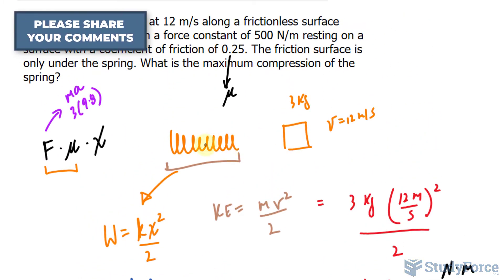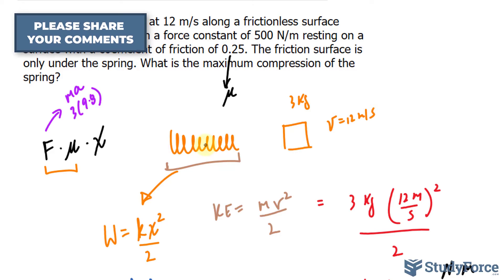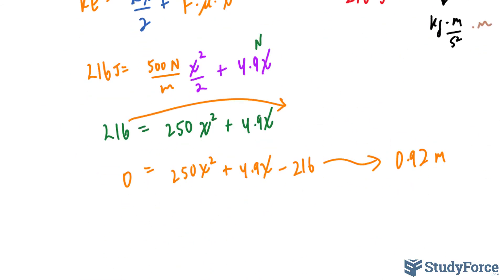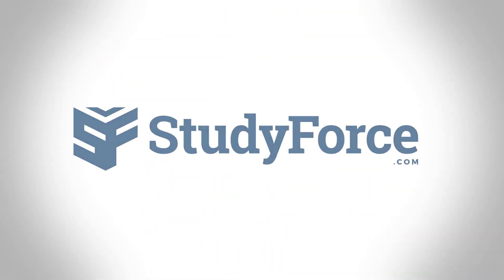So 0.92 meters is the answer. Of course, if the block were going faster or had more weight, it would compress the spring more. But given these parameters, 0.92 meters is the maximum compression.